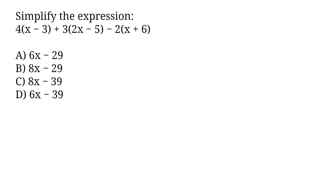Simplify the expression: 4 times (x minus 3) plus 3 times (2x minus 5) minus 2 times (x plus 6). A. 6x minus 29. B. 8x minus 29. C. 8x minus 39. D. 6x minus 39.